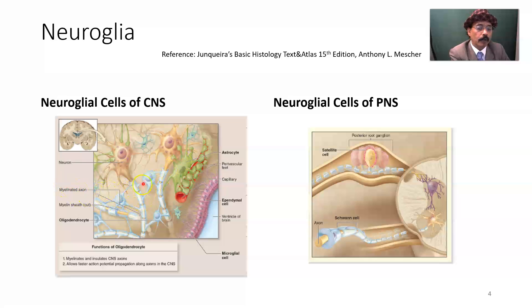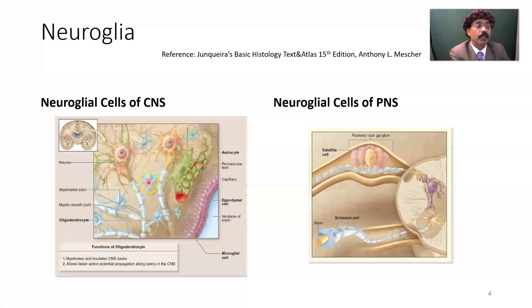One oligodendrocyte can myelinate multiple axons in the central nervous system. Oligodendrocytes do not form myelin in the peripheral nervous system. The peripheral nervous system axon is myelinated by the Schwann cell.